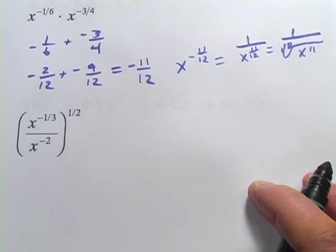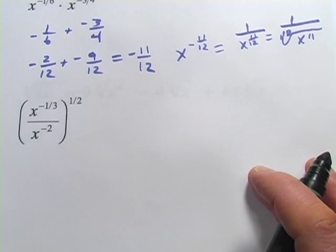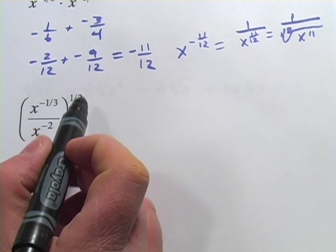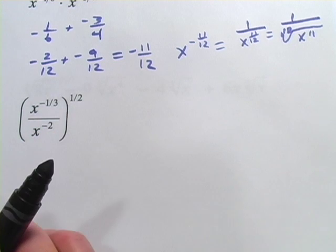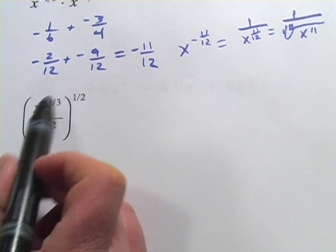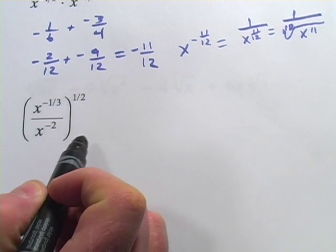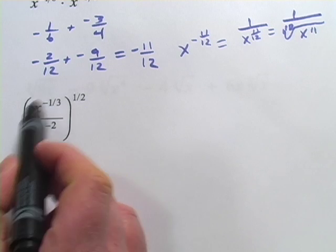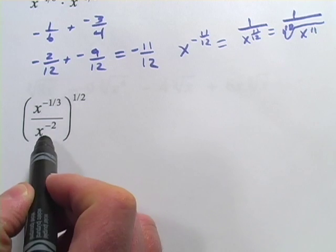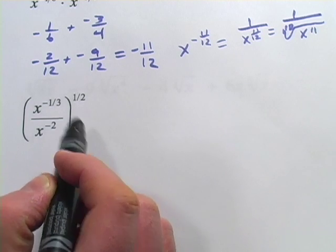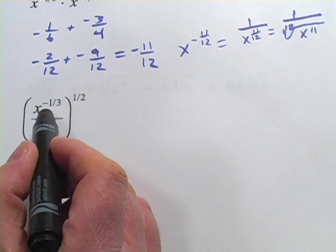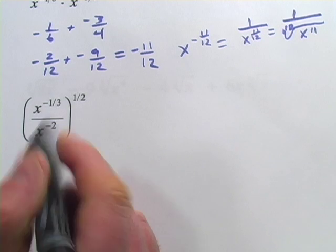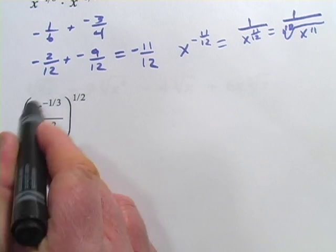Let's take a look at this next one — it looks pretty complicated. We have a fraction, and we're raising it to a fractional power. Remember, when you raise a fraction to a power, both the top and the bottom get raised to that power. And when you're raising a power to a power, you multiply the powers. So let's do this one piece at a time.